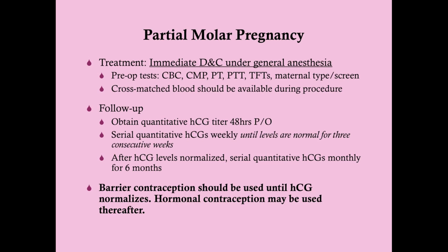The treatment and management of partial molar pregnancy is identical to complete molar pregnancy. We do a D&C, and preoperatively you'll get tests: CBC, CMP, and coagulation tests (PT and PTT) to rule out underlying bleeding disorders. Thyroid function tests can likely be omitted if you've diagnosed this as a partial molar pregnancy, since we're not worried about hyperthyroidism. Get maternal type and screen and have cross-matched blood available during the procedure. Follow-up: quantitative HCG at 48 hours postoperatively, then serial quantitative HCGs every week until levels are normal for three weeks, then every month for six months. The same contraceptive advice applies: barrier contraception until HCG normalizes, then hormonal contraception for the next six months.